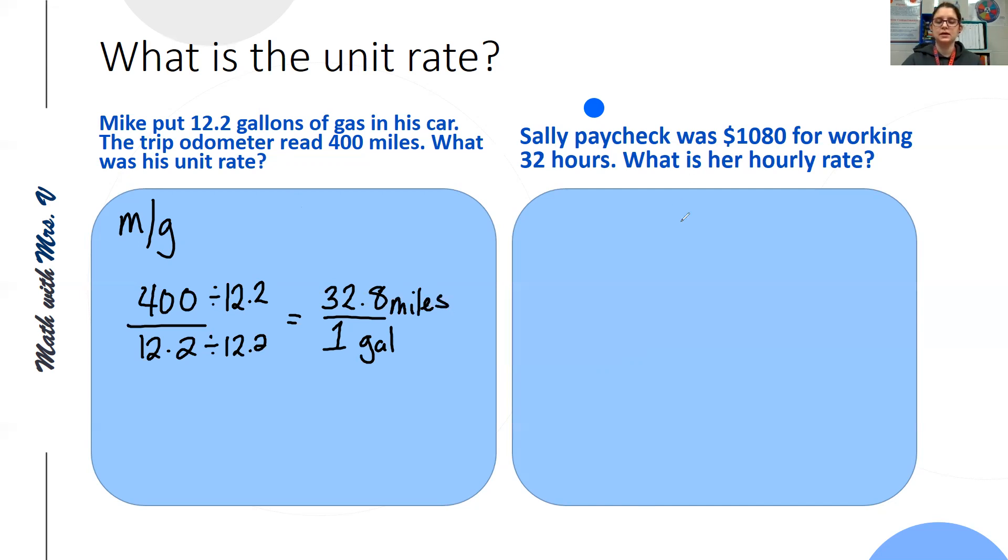Last one. Sally's paycheck was $1,080 for working 32 hours. What is her hourly rate? Our hourly rate tells us we want our units of hours.